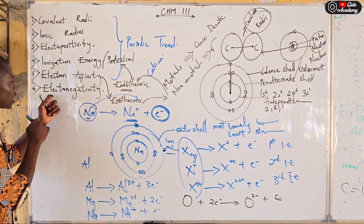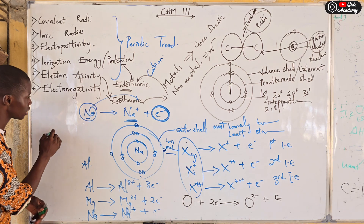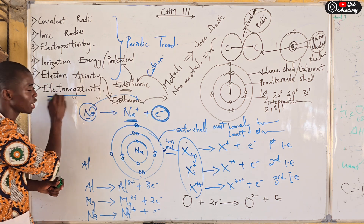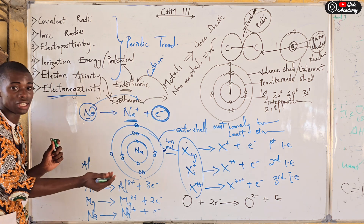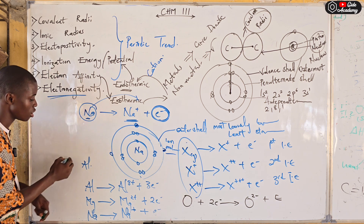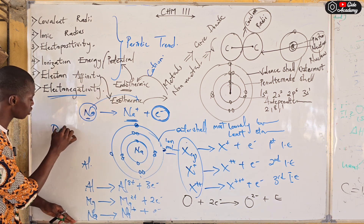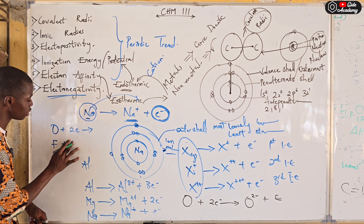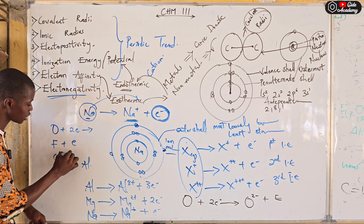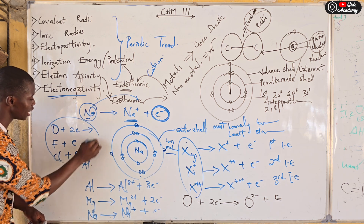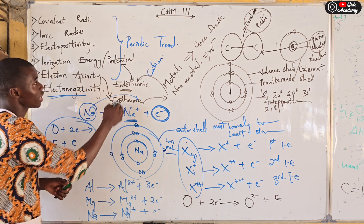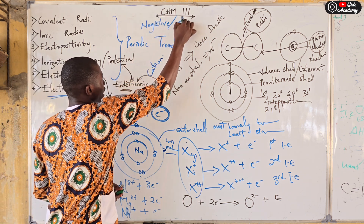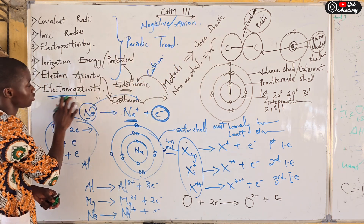The last periodic trend is electronegativity. Elements on the right-hand side of the periodic table are non-metals, and non-metals are usually electronegative — that is, they accept electrons from an electropositive element. For example, oxygen accepts two electrons, fluorine accepts one electron, and chlorine accepts one electron. Any element that has the tendency to accept electrons, making it negatively charged or forming an anion, is referred to as an electronegative element.